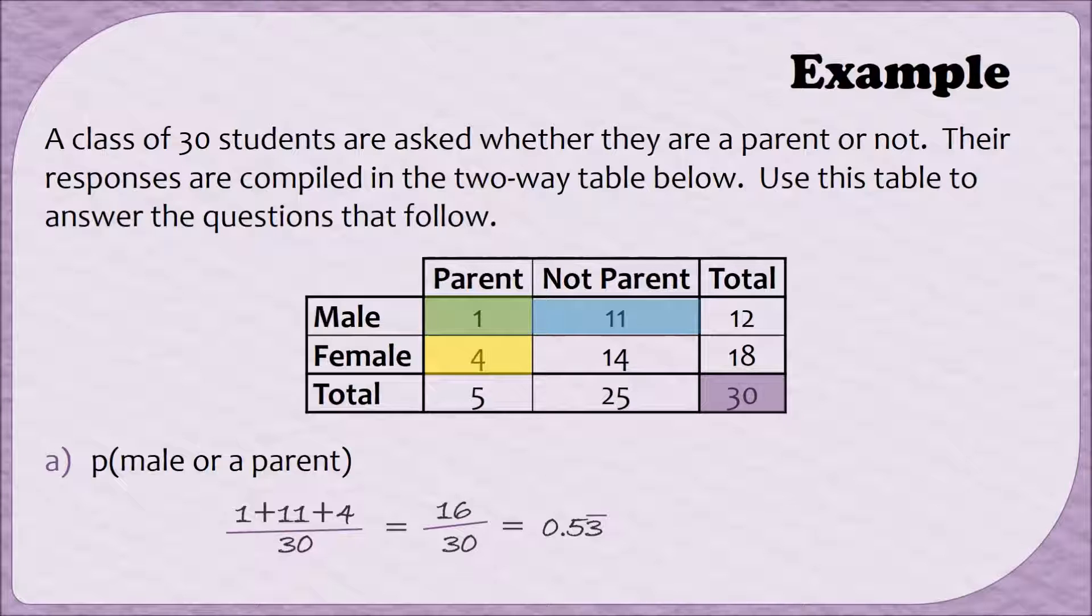Let's do another example. This time, we need to find the probability that a person is a male and a parent. In this case, since the connecting word is AND, we need this person to satisfy both conditions. In other words, this person must be in the row for male and the column for parent. The only person that fits that property is that one person in this overlapping box. So this is going to be our numerator. Since we're still looking out of the total group of people, our denominator is still going to be a 30. When I divide one by 30, I end up getting 0.0 repeating threes. So the probability that somebody from this group is a male and a parent is 0.03 repeating.